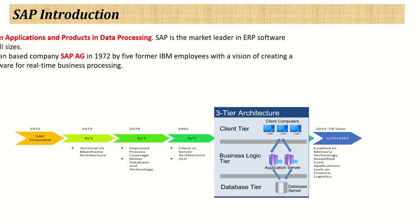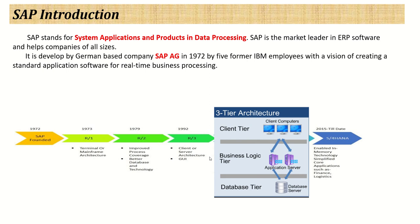In the three-tier architecture of SAP R3, there is a database layer, an application server, and a client tier — the client being a laptop or workstation through which we access the database, with an application server in between to perform any logic. That architecture will be covered at a later stage. After the ECC product, the next successful SAP product — launched in 2015 and still ongoing — is S/4HANA. The difference between ECC and S/4HANA will be explained later. This is the journey of SAP products till now.